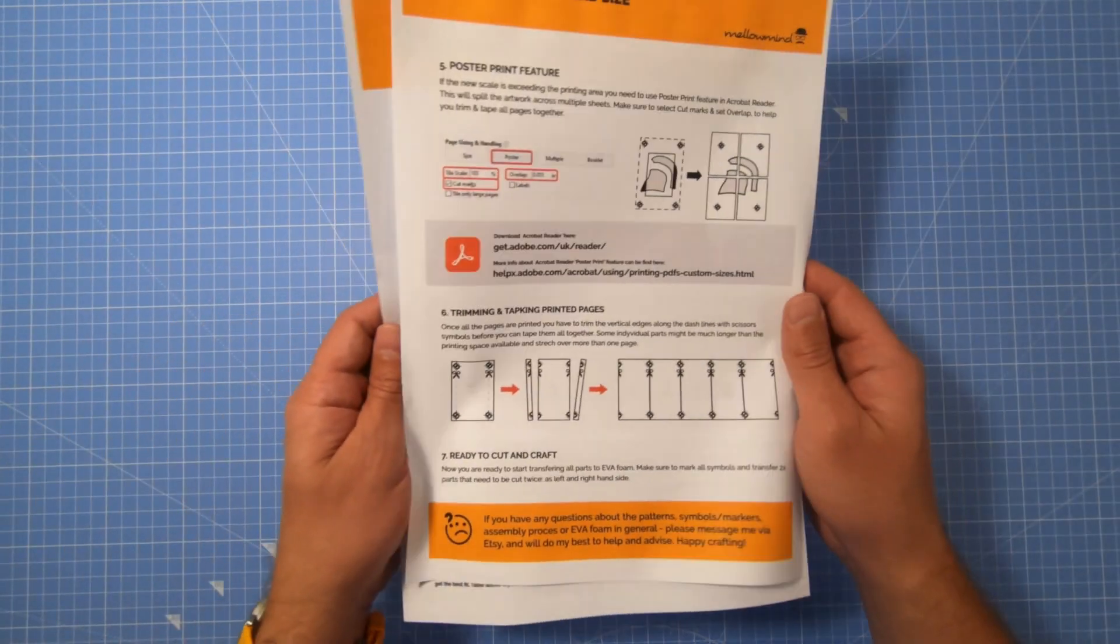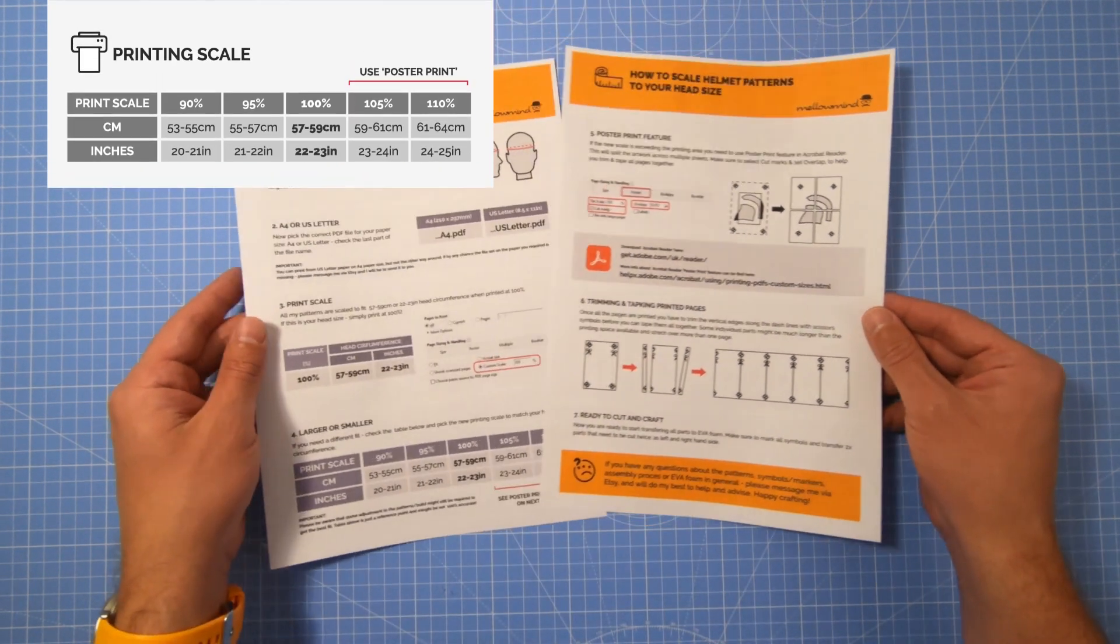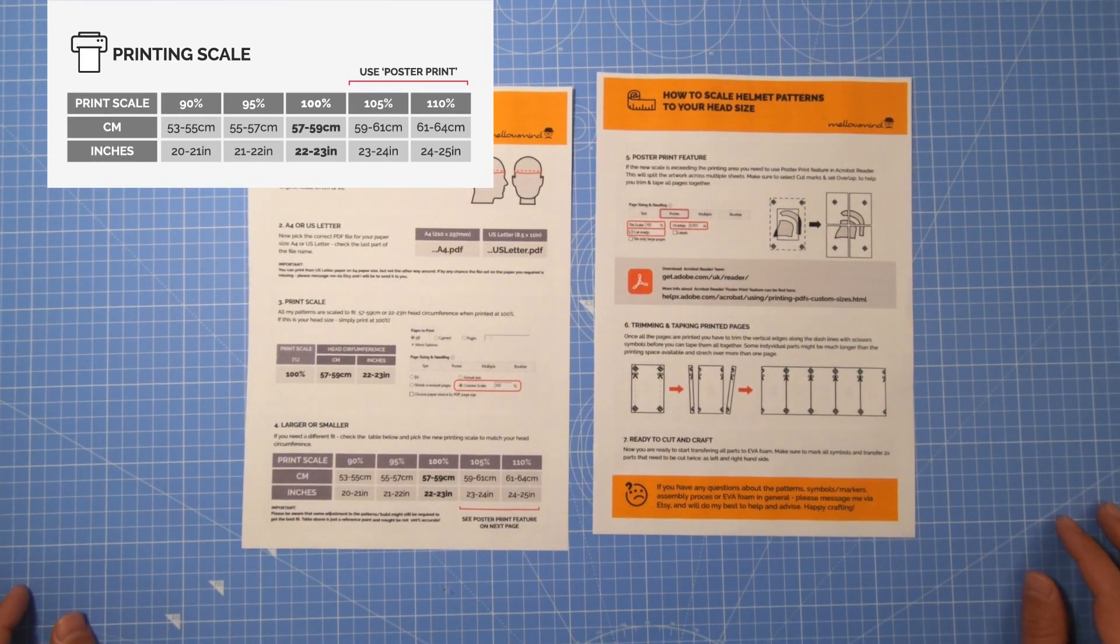First step is to choose the correct printing scale, so make sure to measure your head and check the table to see what scale will give you a nice fit.